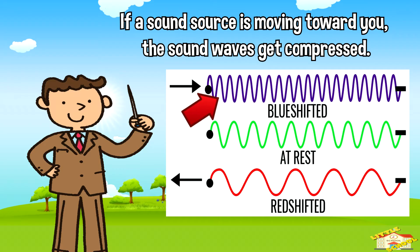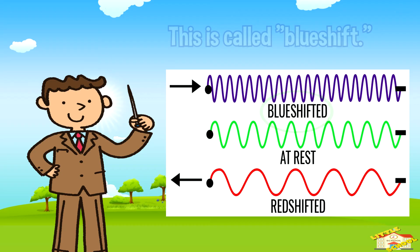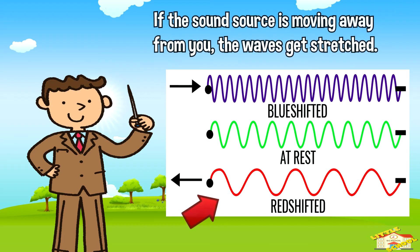If a sound source is moving towards you, the sound waves get compressed, leading to a higher frequency and a higher perceived pitch — this is called blue shift. If the sound source is moving away from you, the waves get stretched, resulting in a lower frequency and a lower perceived pitch.